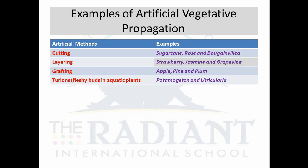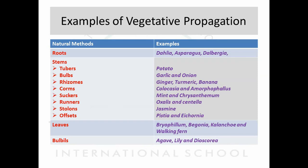The last artificial method is turions, which normally takes place in fleshy buds in aquatic plants — for example, Potamogeton and Utricularia. These are some of the artificial vegetative propagations. To summarize: natural methods include roots, stem (with types: tubers, bulbs, rhizomes, corms, suckers, runners, stolons, and offsets), leaves, and bulbils.